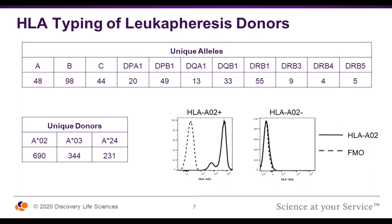Our apheresis donors are fully typed at the HLA loci. This slide shows the number of unique alleles we see at each locus, demonstrating the breadth of alleles available. We are most commonly asked for HLA-A02, A03, and A24, and we have over 100 donors in each of those HLA types. We also validated an in-house flow cytometry assay to identify HLA-A02-positive donors, giving us a binary yes/no result in real-time, as shown in the flow plots in the bottom right.